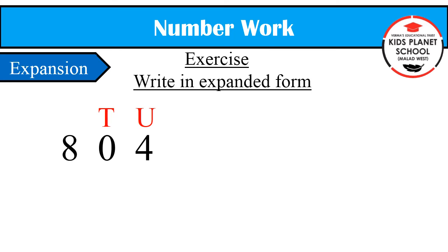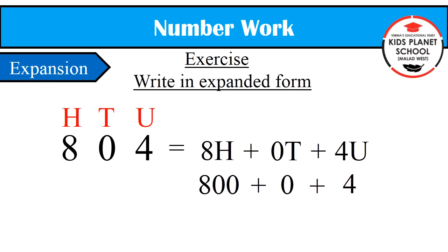Children, 8 is at 100th place, so we will write 8H which means 800. Plus, 0 is at 10th place, so we will write 0T which means 0. Plus, 4 is at units place, so we will write 4U which means 4. So children, we have expanded the given number.